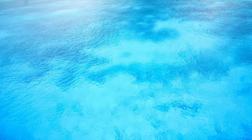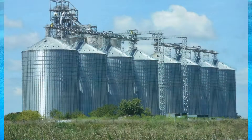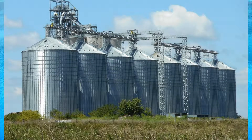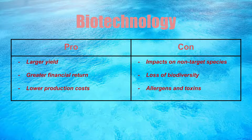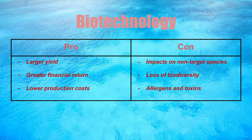Step 10: Store crops. Store crops using many storage methods, such as silos, refrigerators, and underground pits. In all these steps, biotechnology is often present. Some pros of biotechnology include a larger yield, a greater financial return, and lower production cost. Some cons include impacts on non-target species, a loss of biodiversity, and allergens and toxins.